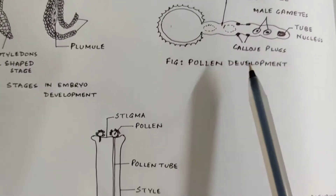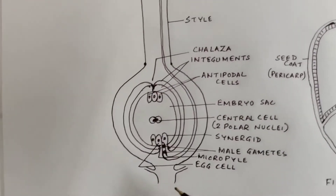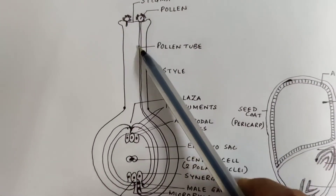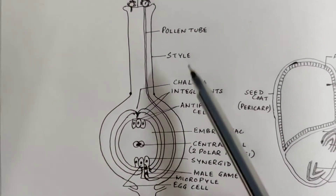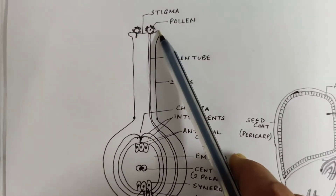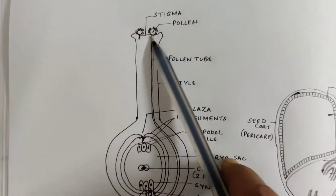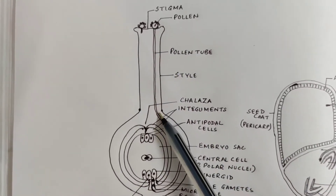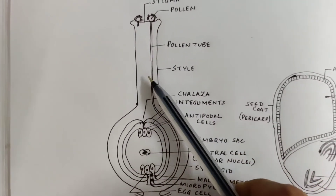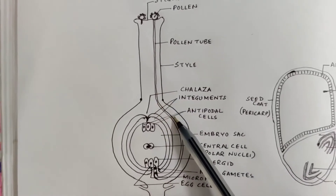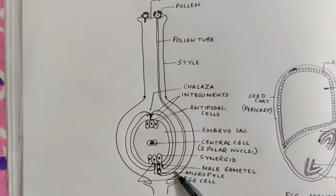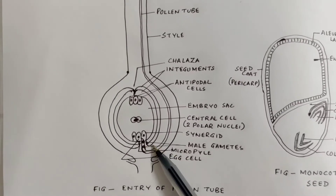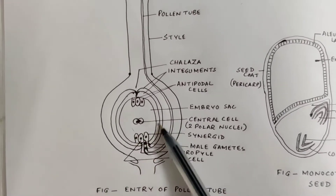Now, coming to the entry of the pollen tube through the female reproductive system. These are the pollens landing on the stigma of the flower. They develop a pollen tube after a few minutes of development. The pollen tube enters and goes on, then enters from the micropylar end of the embryo sac.